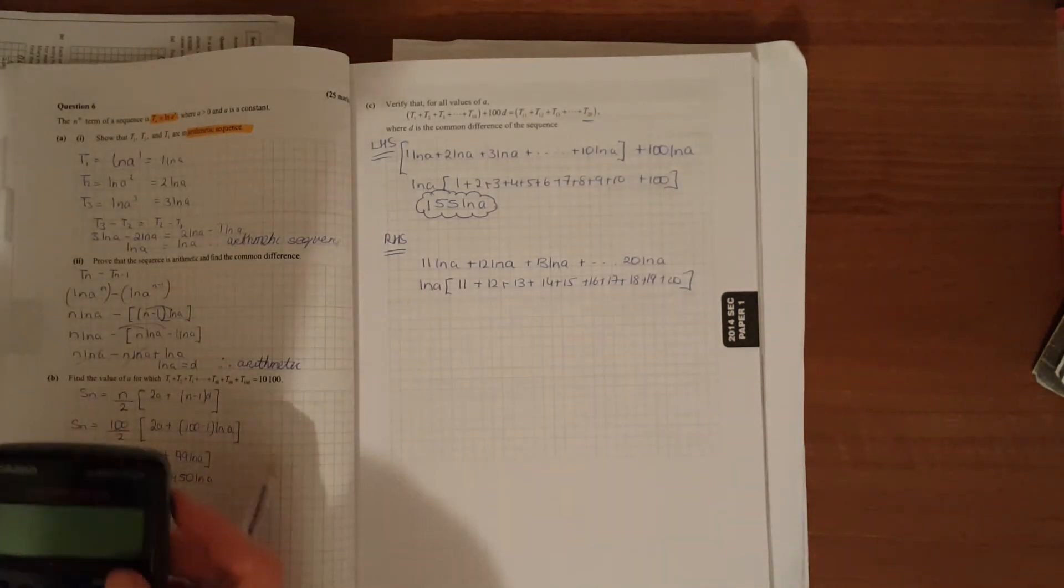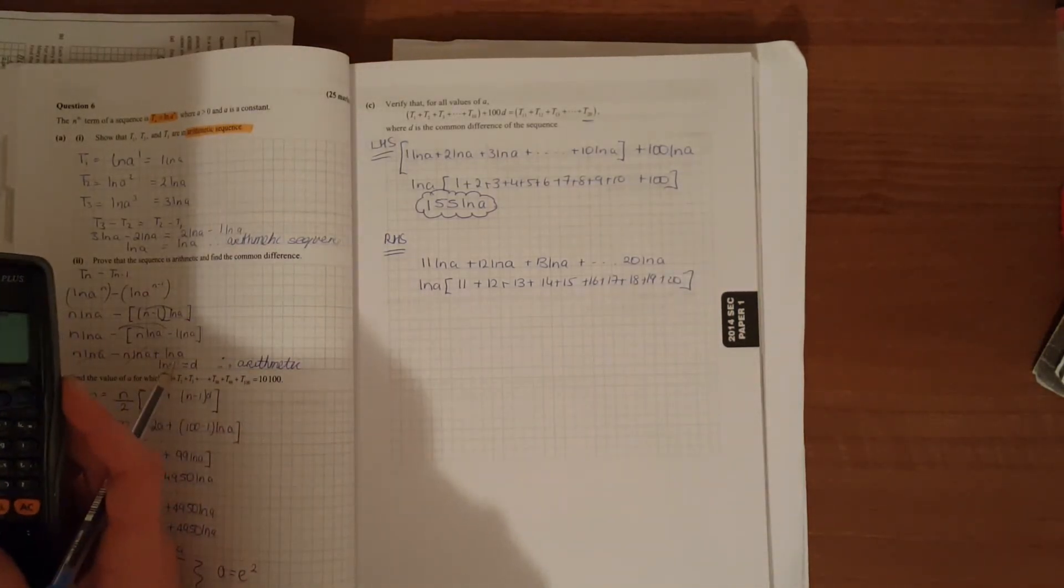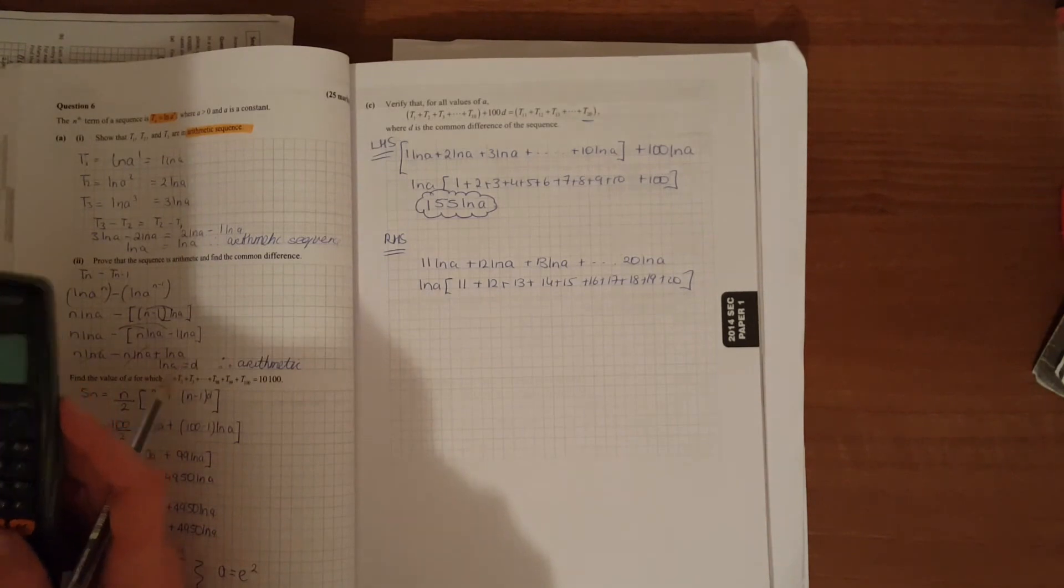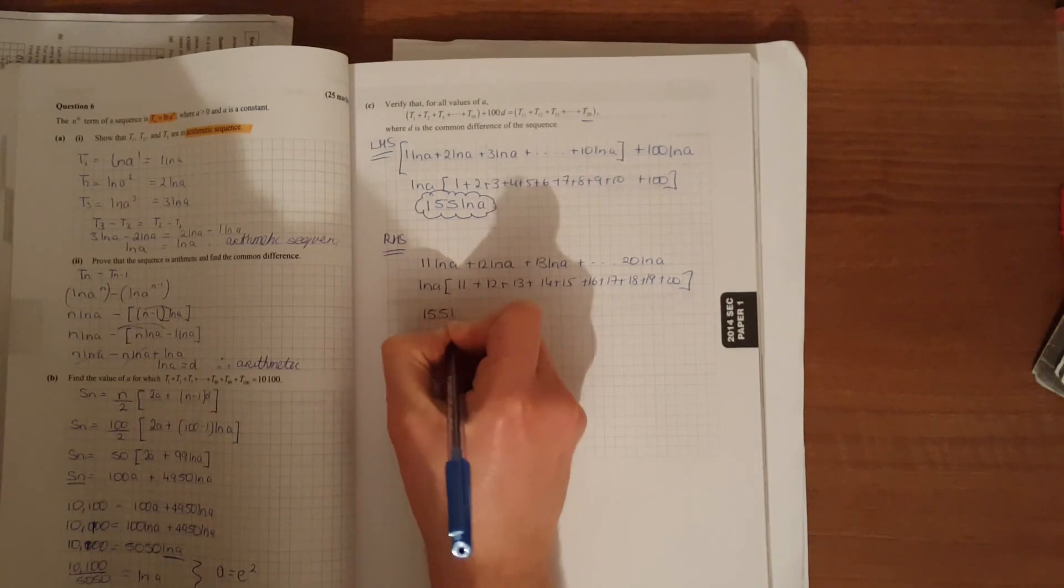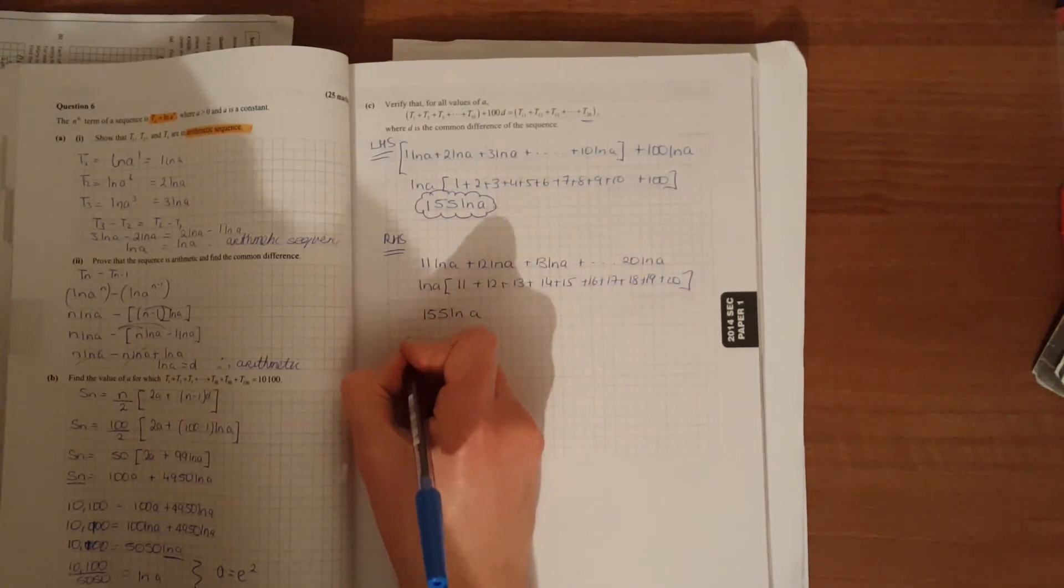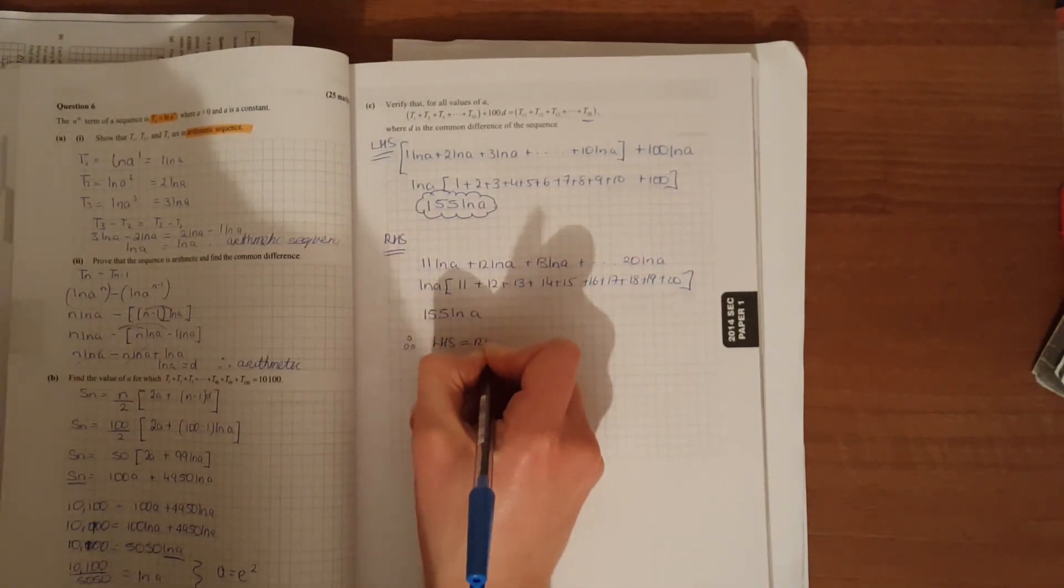When you do that, just to be sure, 23, 35, you get 155 as well. Therefore, the left-hand side equals the right-hand side.